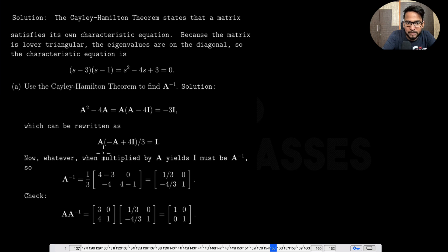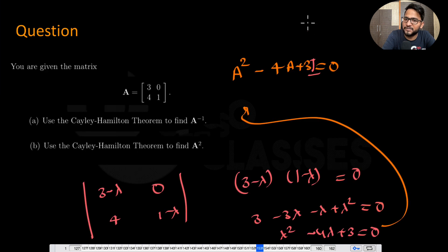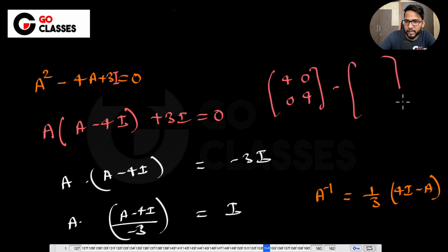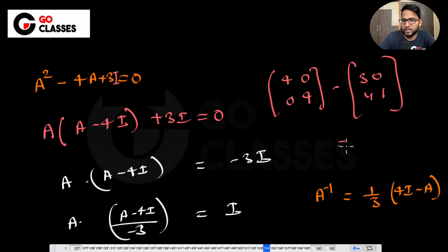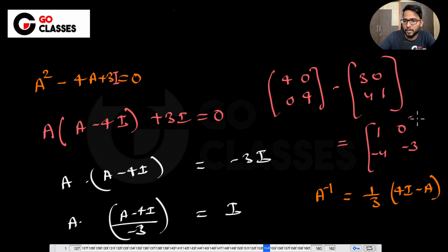The inverse is (1/3)(4I - A). Computing this: 4I minus the matrix A gives a result, and dividing by 3 yields the final inverse matrix. The entries work out, for example giving 1/3, 0, -4/3, -1 in the appropriate positions.